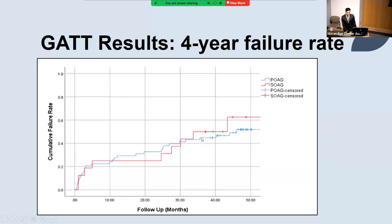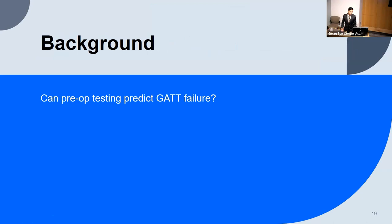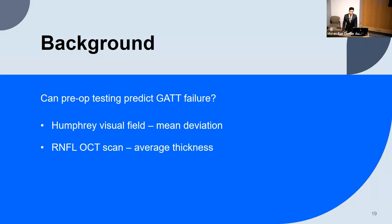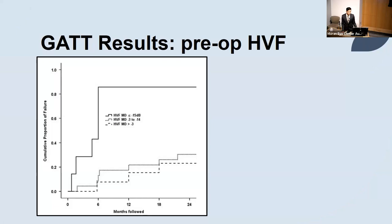Because of these failures, we're wondering: is there some way to restratify patients, using their testing to figure out if they're a good candidate or will fail quickly? Two of the most common tools we use are Humphrey Visual Field testing and OCT RNFL scanning. Can we correlate this data to survival rates for the GAT procedure? Grover at the two-year data actually did this, showing a significant increase in failure for eyes with a mean deviation on the Humphrey Visual Field of worse than negative 15 decibels.